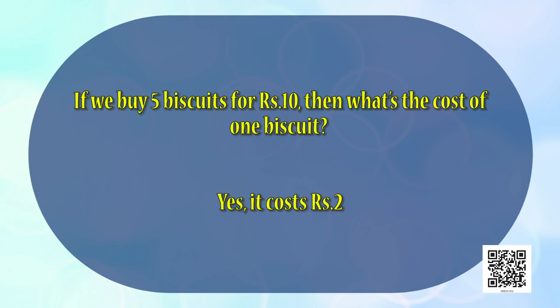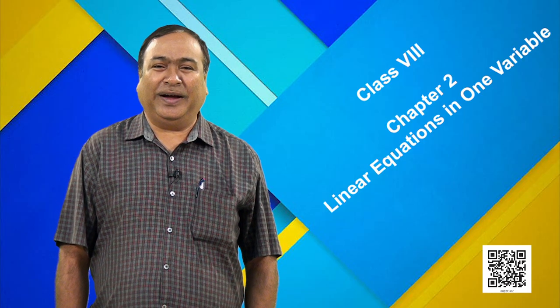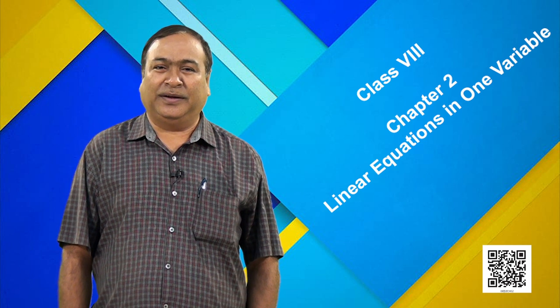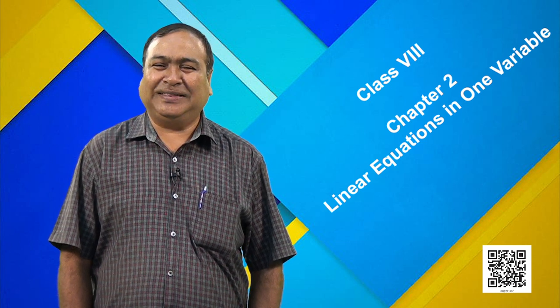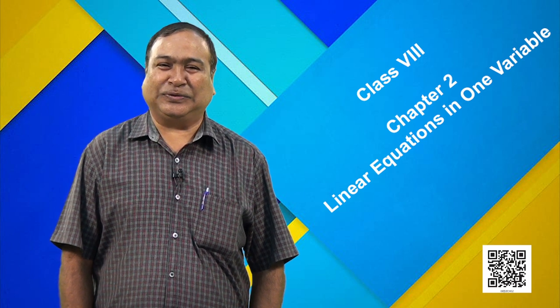Suppose you purchase 5 biscuits for rupees 10, then what is the cost of 1 biscuit? Again it is very easy for you — the cost is rupees 2. In general, if you buy 5 things of the same kind for rupees 10, what is the cost of 1 thing? Exactly, it is rupees 2.